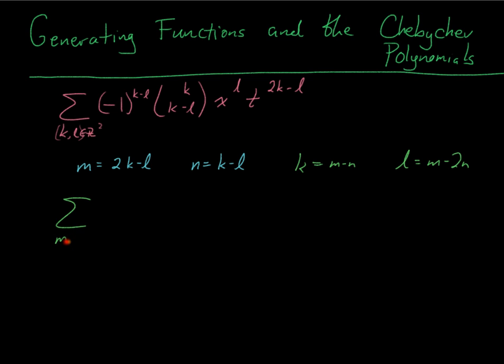So now I've got the sum over m,n of (-1) to the n, k is (m minus n), so (m minus n) choose n. l is (m minus 2n), so x to the (m minus 2n). And (2k minus l), that's what I call m. So t to the m.